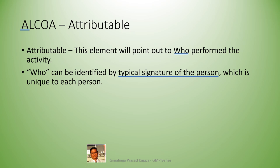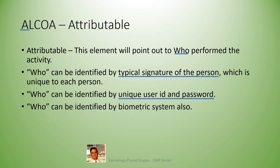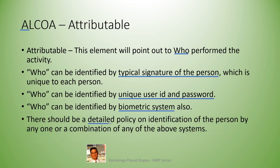This is the earlier method of identification. Earlier, all transactions including bank transactions used to depend only on the typical signature of the person. In the electronic age, the person can be identified by unique user ID and password, which are more effective. Biometric identification with fingerprint or retina are still more advanced methods. There should be a detailed policy on identification of the person by any one or combination of these systems to respond to the query A — the Attributable.